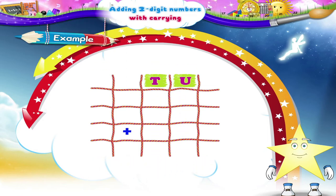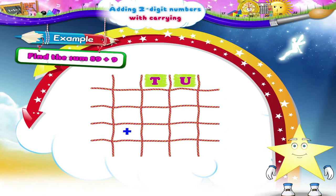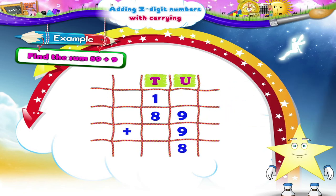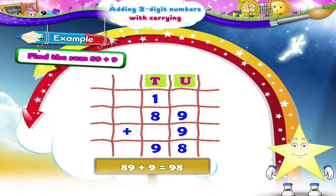Here's the last example to add a single digit number to a two-digit number. Find the sum eighty-nine plus nine. Do you want to solve this one Starry? Nine units plus nine units equals eighteen units. Carry one ten to the tens column. Now adding tens, we get eight tens plus one ten equals nine tens. Thus, eighty-nine plus nine equals ninety-eight.